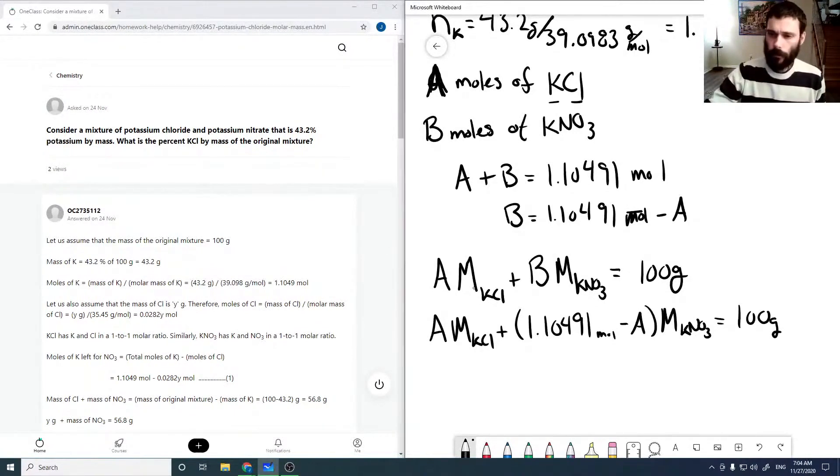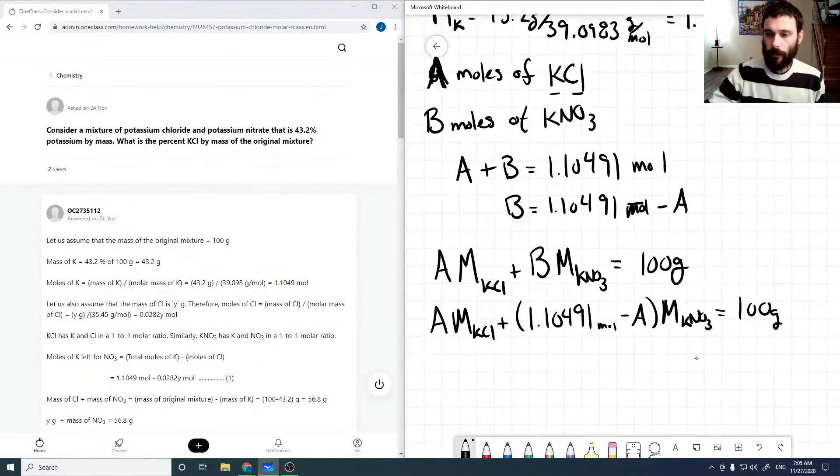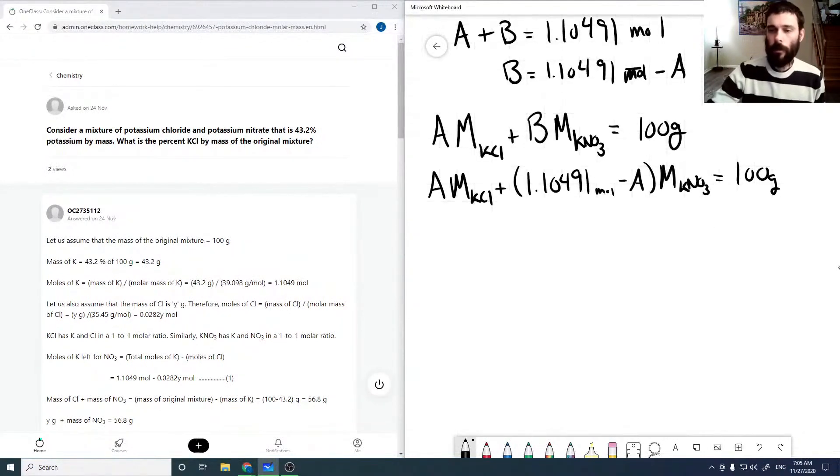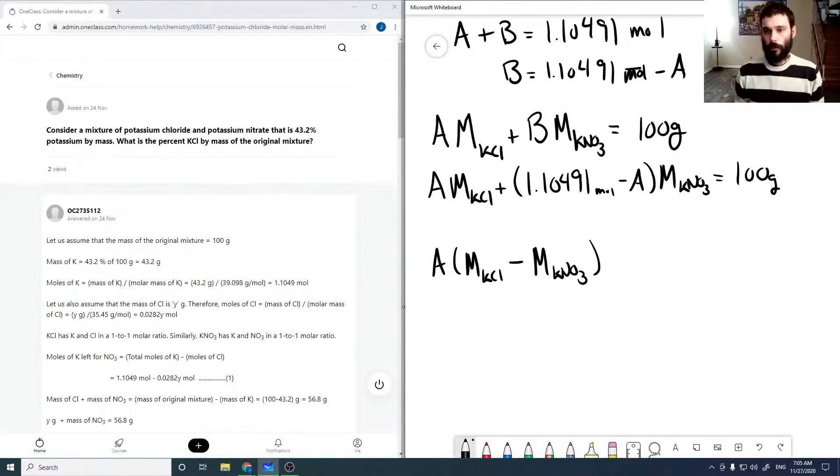Okay, so now collecting terms, we can calculate A because we know all of our molar masses. And so we'd have A times molar mass KCl minus molar mass KNO3 is equal to 100 grams minus—